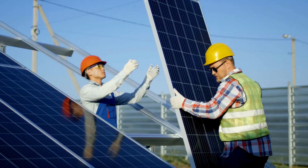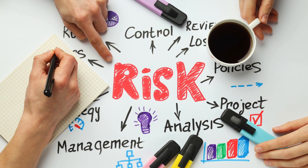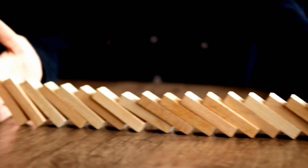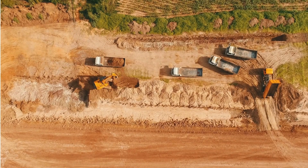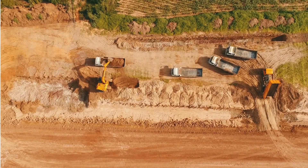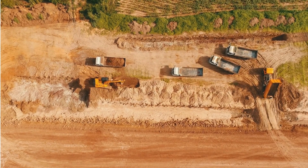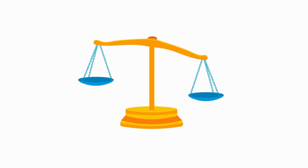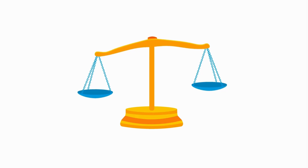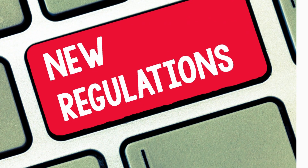Now let's discuss risk management — anticipating and mitigating risks is essential for staying on track. In a bridge project, weather delays or unexpected soil conditions could increase construction costs. Similarly, in a utility-scale solar project, we might face risks such as fluctuations in material costs or changes in government regulations.